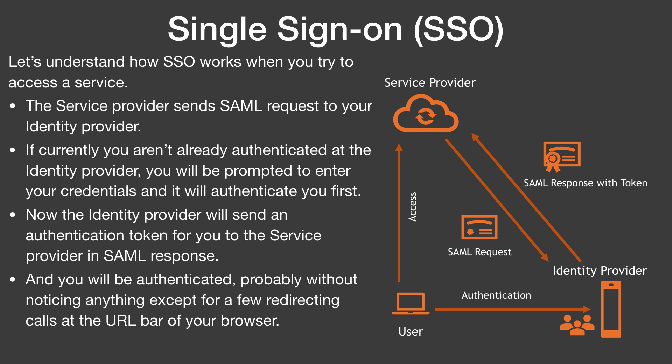Let's understand how it works when you try to access a service. The service provider sends a SAML request to your identity provider. If you aren't already authenticated, you will be prompted to enter your credentials and it will authenticate you first. Then the identity provider will send an authentication token for you to the service provider in a SAML response, and you will be authenticated — probably without noticing anything except for a few redirecting calls at the URL bar of your browser.